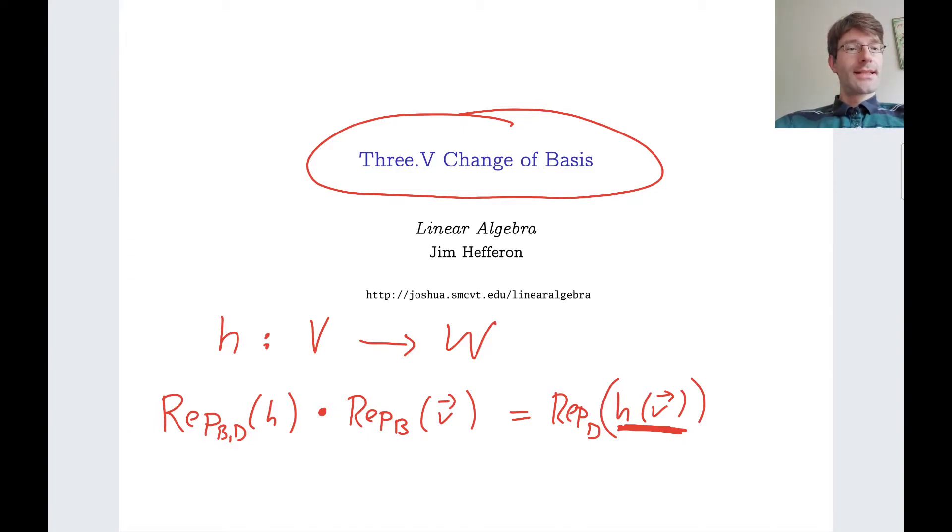What we are doing today is we are looking at the special case of H, the map H being the identity map. You might think, that's going to be trivial because then as representation, we are going to get the identity matrix. Well, that's not always true. So let's do things slowly. If we take as H the identity map, what is true is that then as co-domain space, we must have the same vector space V.